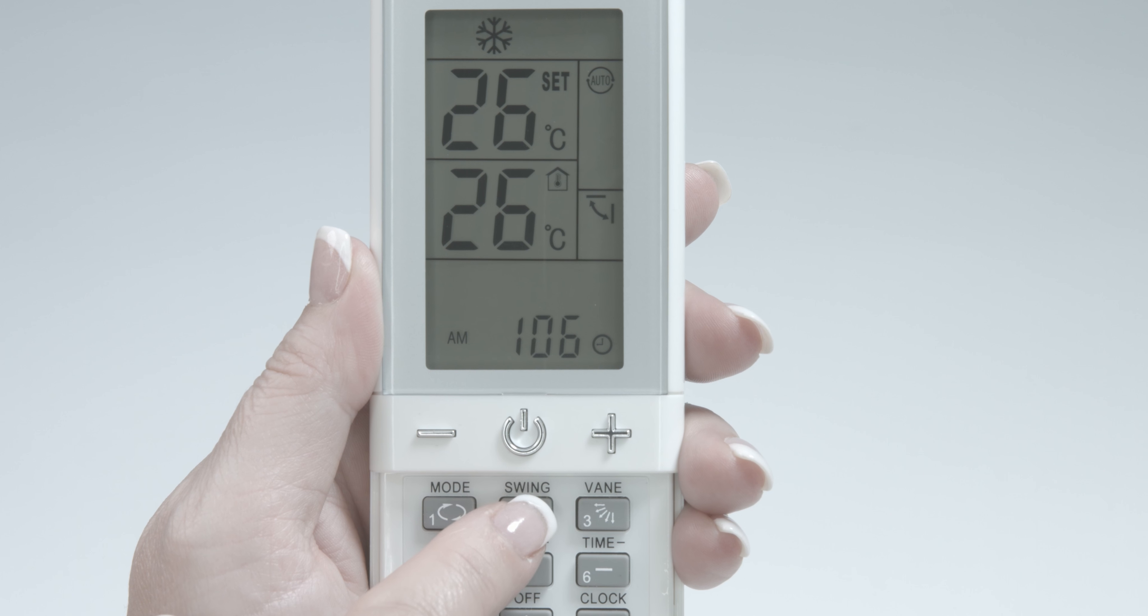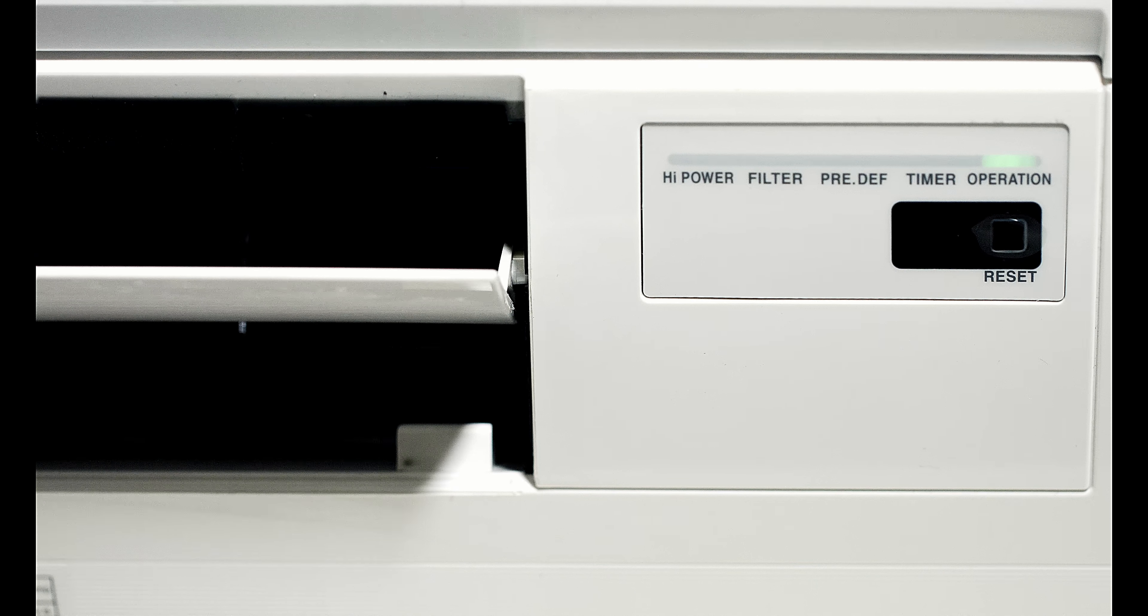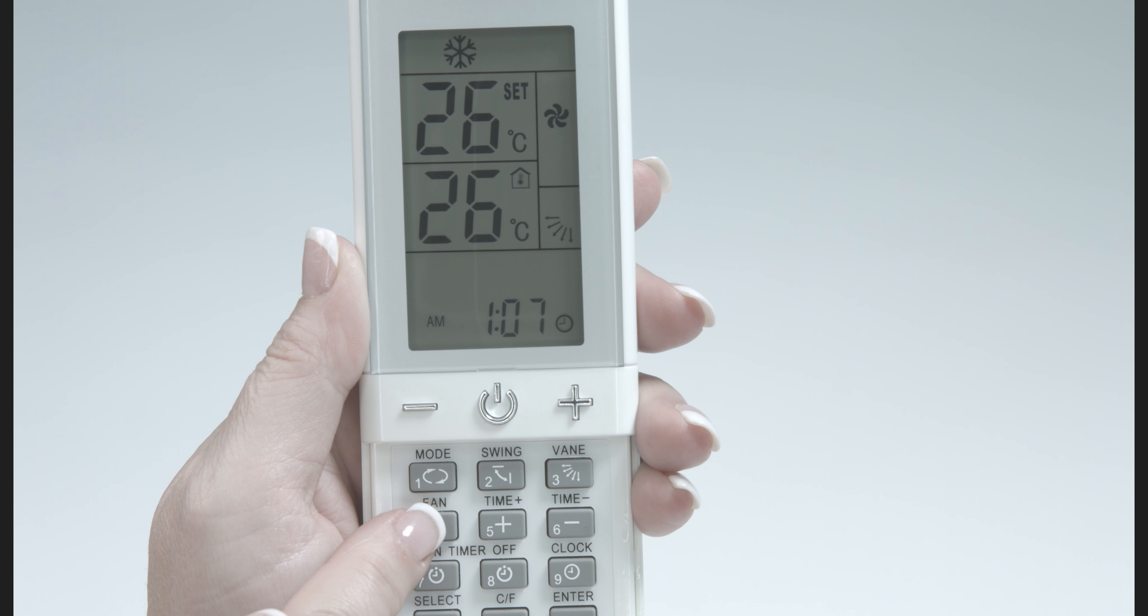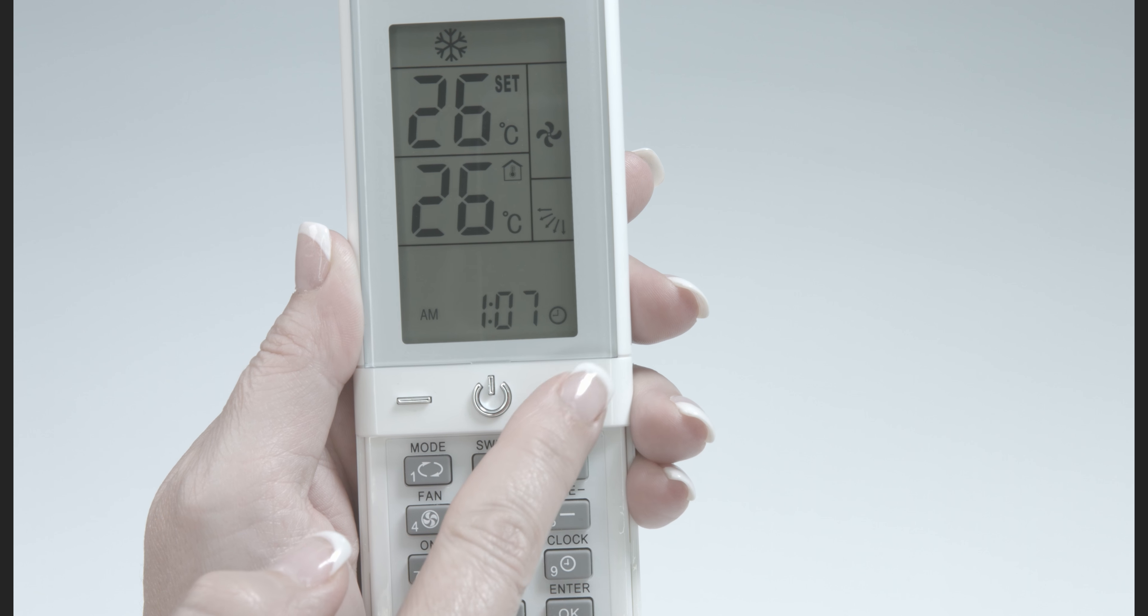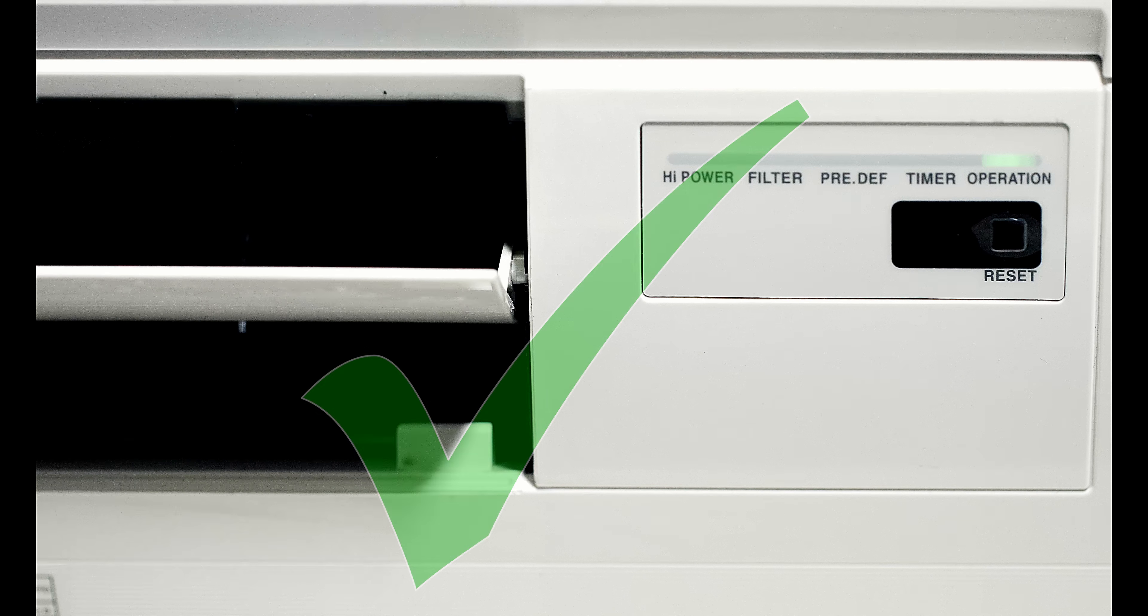To do this, we try some other functions. Swing function. That is perfect. Fan speed. Perfect. We'll just try temperature up and down. All working.